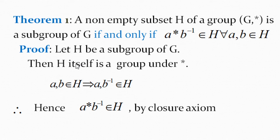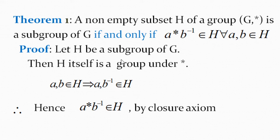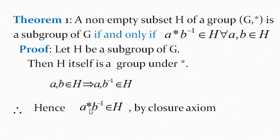Let H be a subgroup of G. Then by definition, H itself is a group under binary operation star. Now A, B belong to H means B⁻¹ also belongs to H because H is a group and inverse exists. Since A and B⁻¹ both belong to H, by the closure axiom, A * B⁻¹ also belongs to H. So the first part of the proof is complete.